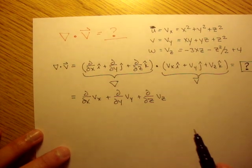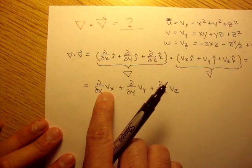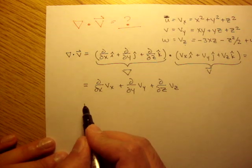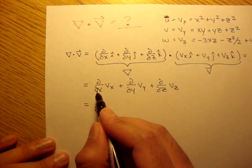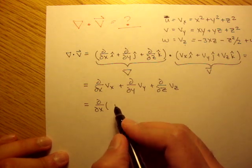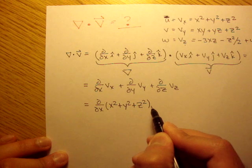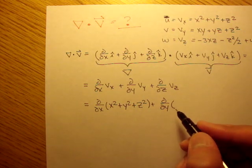So we can fill this in. We have v of x, v of y, v of z. We plug those into the formula, solve, and we get our dilation rate. So the first term here, v of x, is x squared plus y squared plus z squared, plus the partial in respect to y of v of y. v of y is xy plus yz plus z squared. Right, that's given up here.